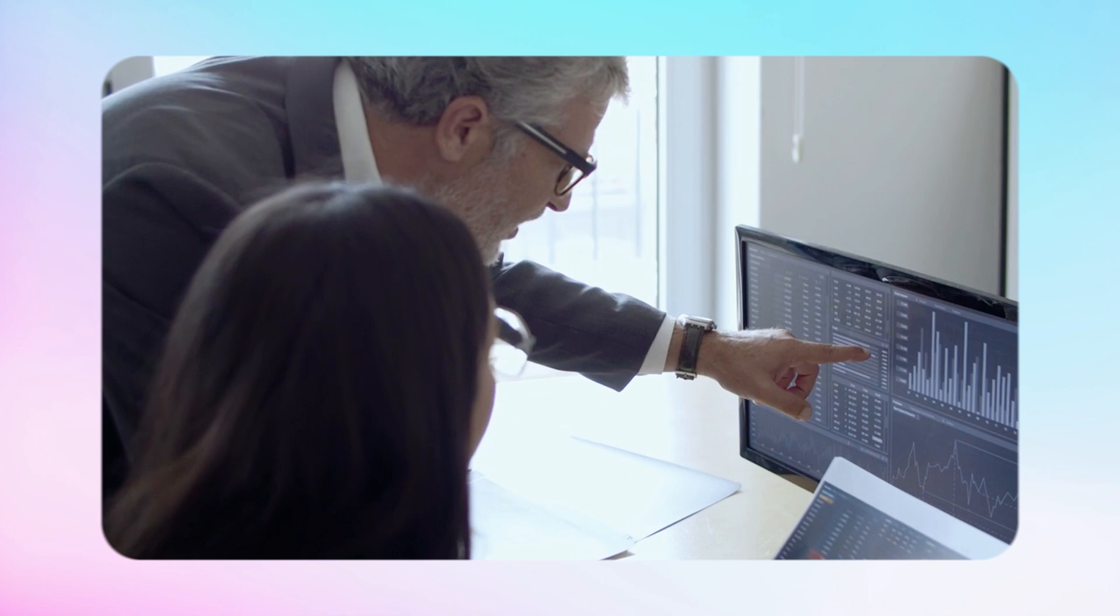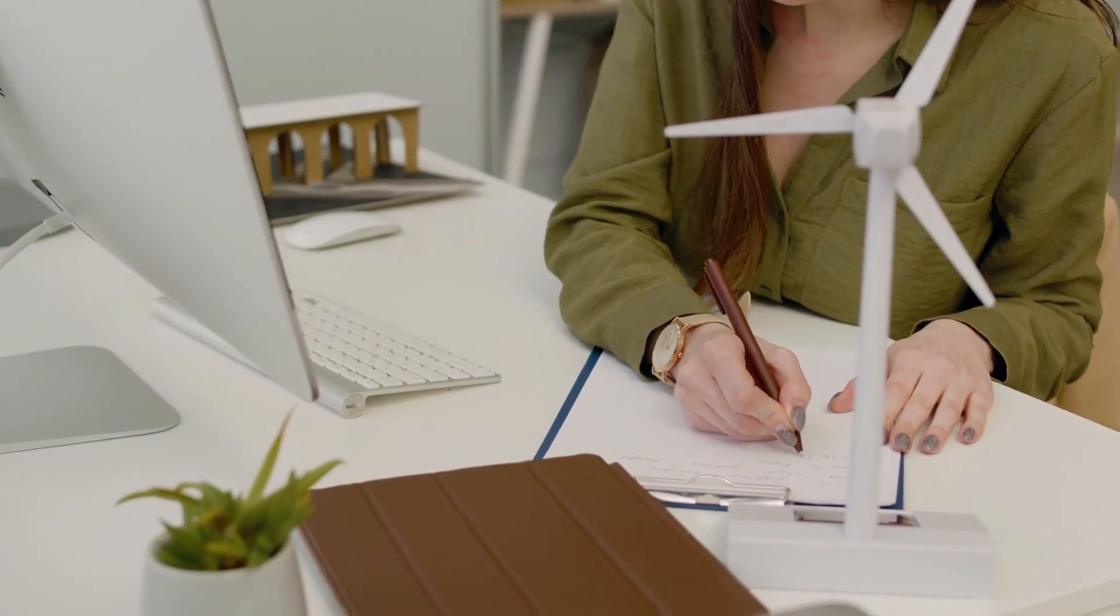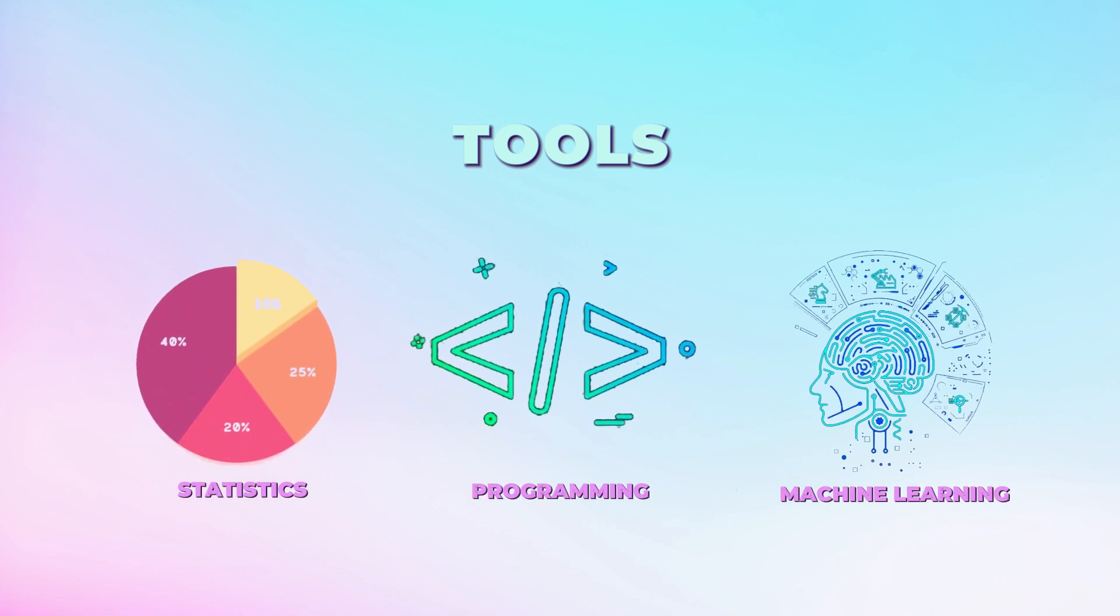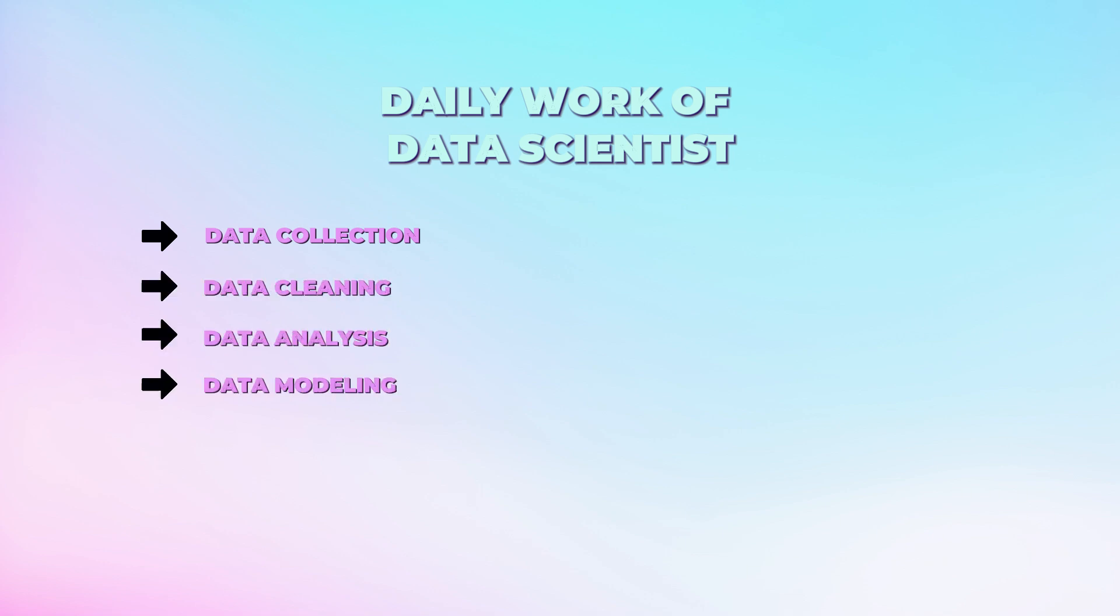So you as a data scientist in a company need to do the collections of the data, then structuring that data, then analysis of the data. Now based on that analysis, you need to interpret the pattern and the trends of the business. Like data scientists use various tools and techniques like statistics, programming, machine learning to extract the valuable information from the data and solve the real world problems. So your daily work as a data scientist in a company is data collection, data cleaning, data analysis, then the modeling of the data and then deployment of that model. So what are these terms? If you understand these terms, then you will get a fair idea about the data science as a stream.